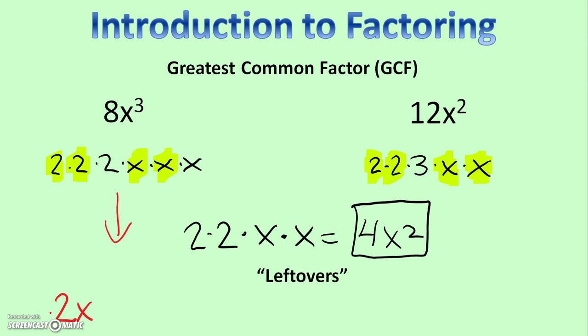Now, let's do the same thing with 12x squared. When we take 4 out of 12 by dividing, we are left with 3. Now, we take x squared out of x squared. There are no x's left. So, the leftovers, in this case, would just be 3. Continue on to the next video to get into factoring expressions.